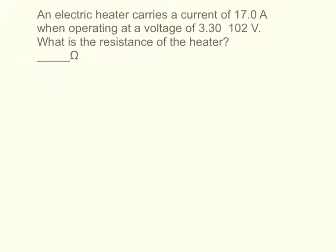An electric heater carries a current of 17 amps when operating at a voltage of 3.3 times 10 to the 2 volts. What is the resistance of the heater?